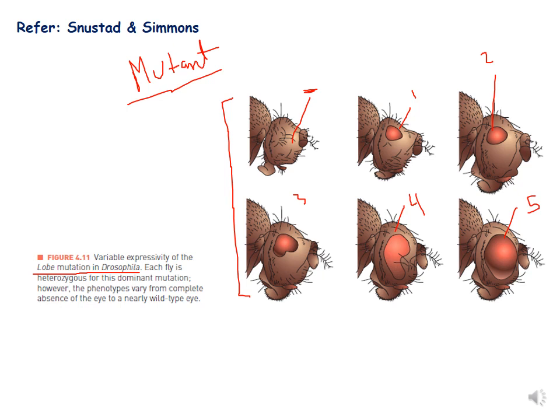This is figure 4.11 from Snustad and Simons, which shows variable expressivity of the lobe mutation in Drosophila. Each fly is heterozygous for this dominant mutation. However, the phenotypes vary from complete absence of the eye to a nearly wild-type eye. In the first picture there is no eye, while pictures 2, 3, and 4 show variation in the shape of the eye. The last picture shows a nearly wild-type eye. This photograph illustrates expressivity.